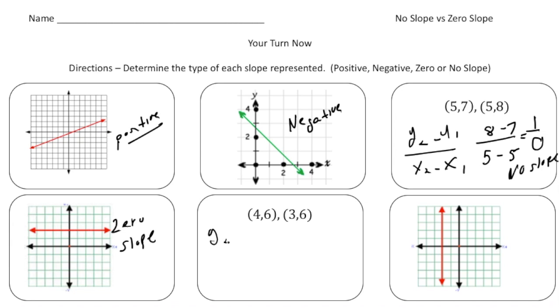Here again, we need to use y2 minus y1 over x2 minus x1. That's going to be six take away six over three minus four. And six take away six is zero. And three minus four is negative one. And this time the zero is in the numerator. So that one is going to be a zero slope.